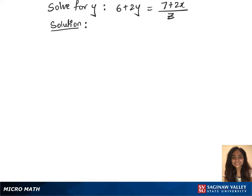To solve this equation for y, we will first multiply z on both sides, which gives us z times 6 plus 2y on the left equals 7 plus 2x on the right.